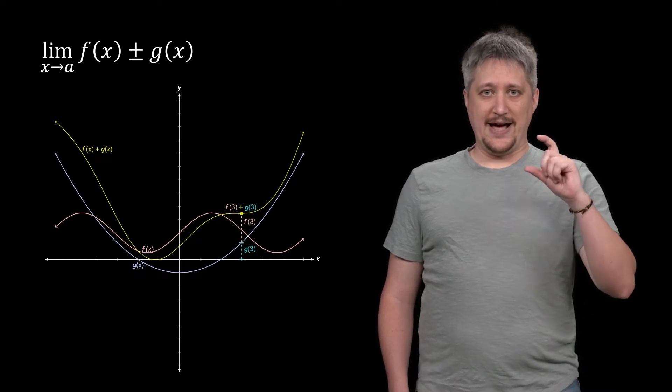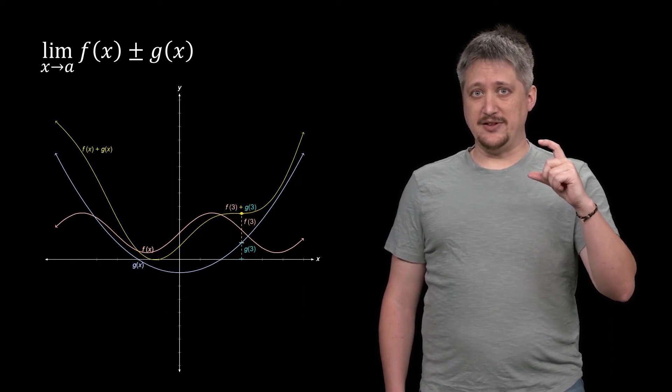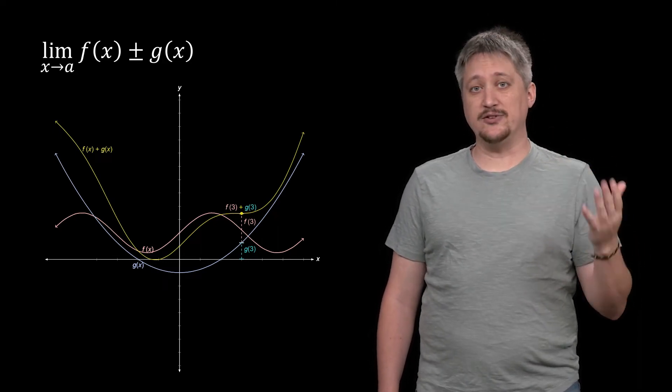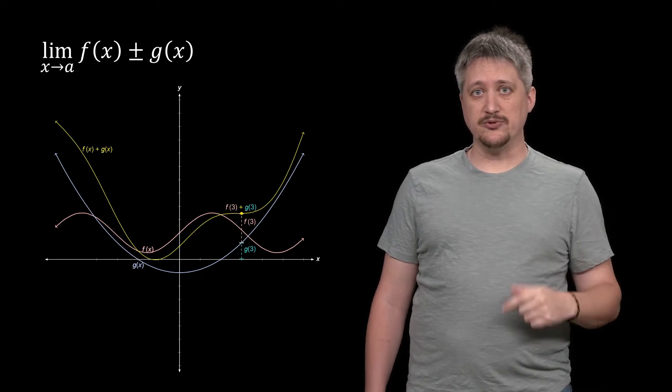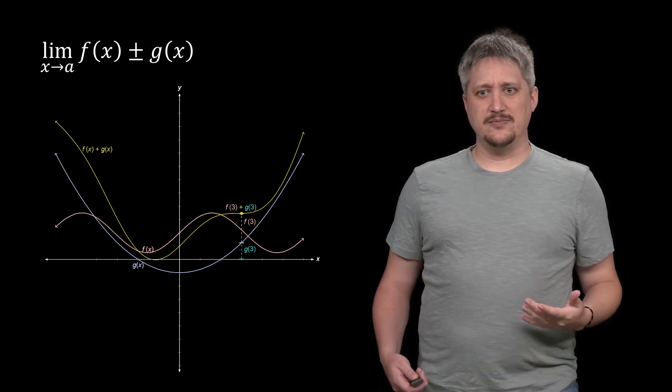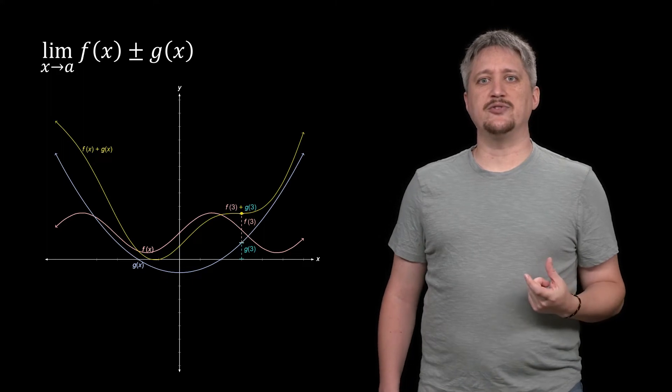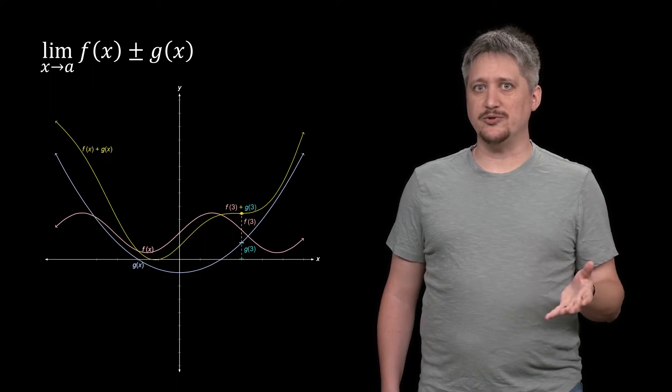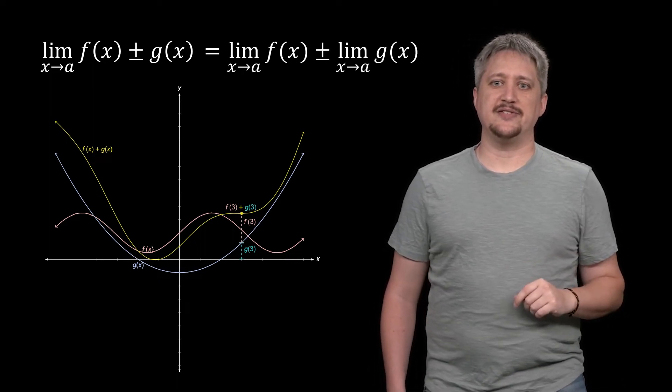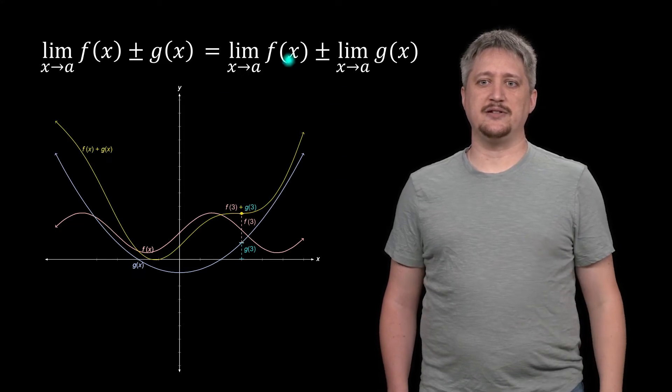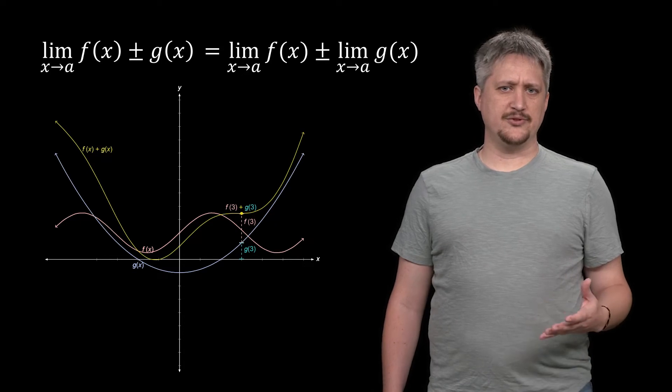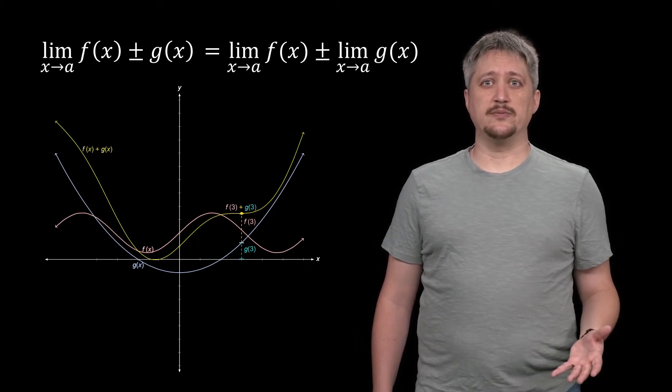Because we're adding those two points together, f(3) plus g(3), that means all the numbers near 3 are also getting added. f(2.99) plus g(2.99) is still going to be close by because each of those individuals is close by. This is telling us that if the limit exists at that point, then adding them together is still going to exist at that point. In particular, we can take the limit independently: we can take the limit of f plus or minus the limit of g instead of only looking at the limit of f plus or minus g.